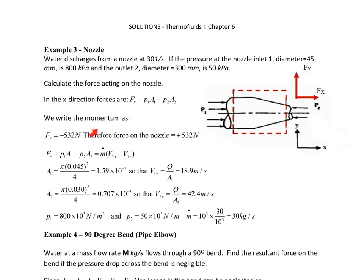We write down the momentum as FX is equal to minus 5.32 N. Therefore, the force on the nozzle is 5.32. How did we get that?